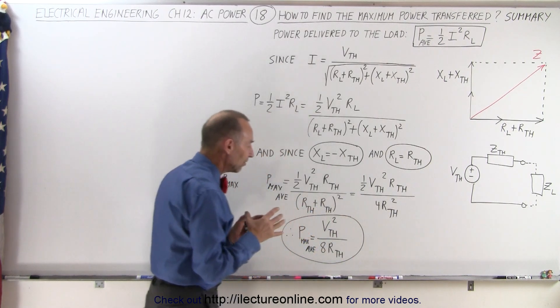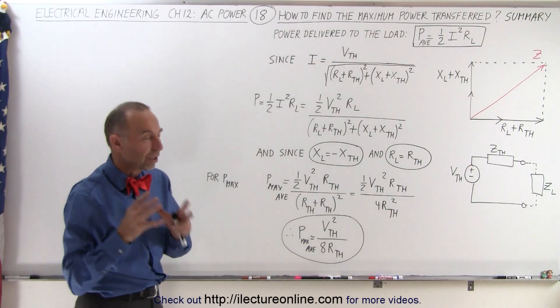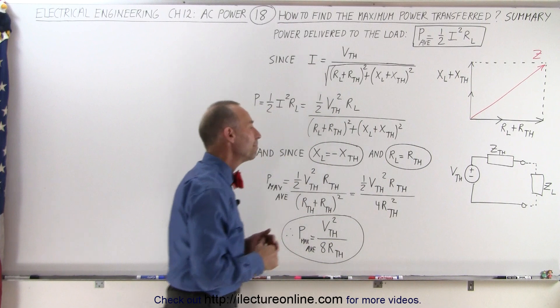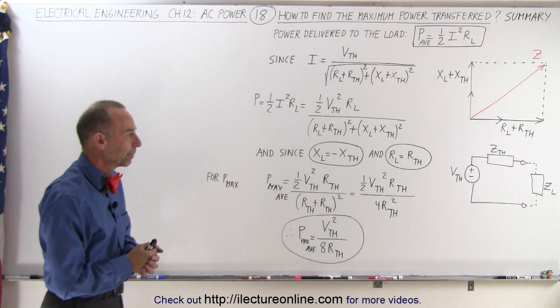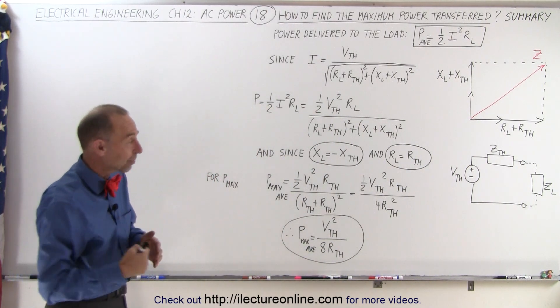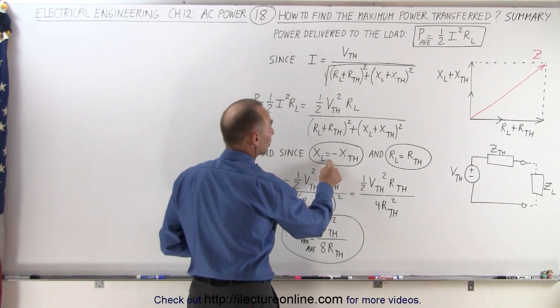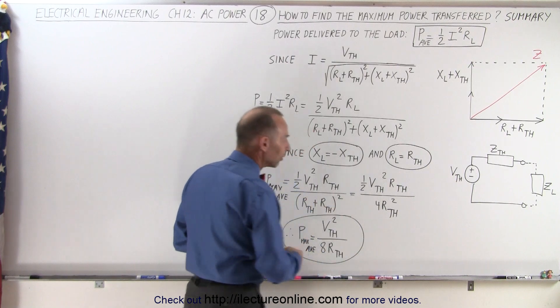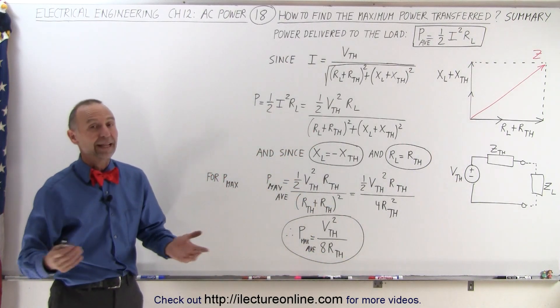That is the maximum power delivered to the load circuit, the load impedance that we attach to the circuit delivering the power. And then we've learned that to get the maximum, we must make sure that these two conditions are true. If these two conditions are true, then this is the power delivered to the circuit. And that's how it's done.